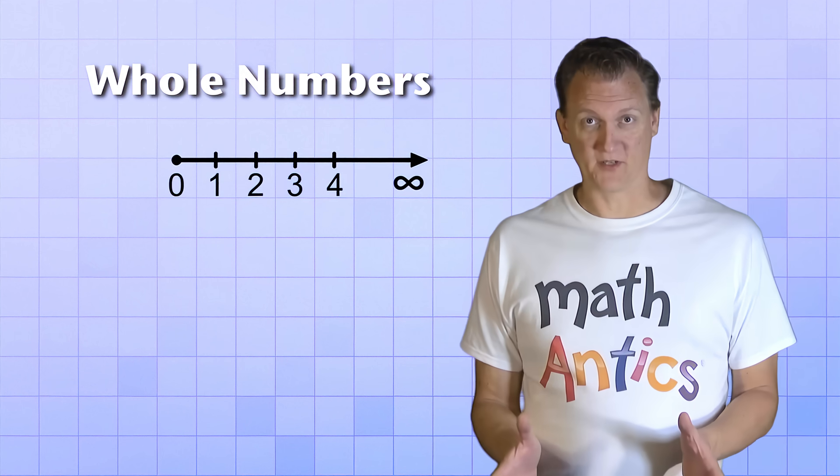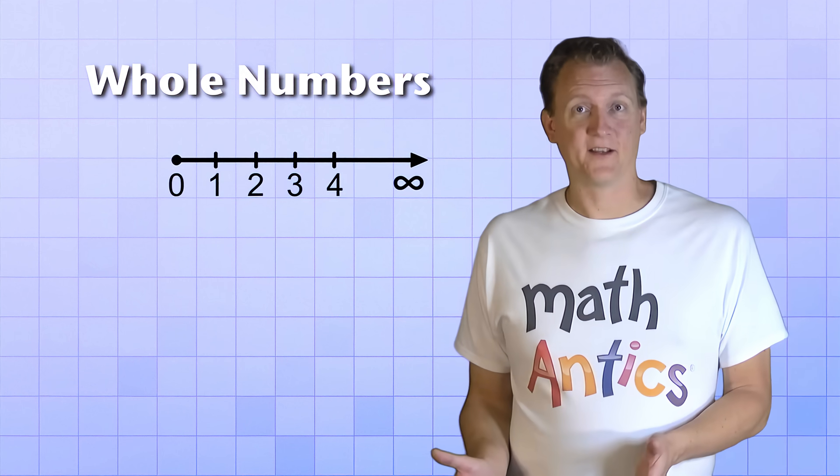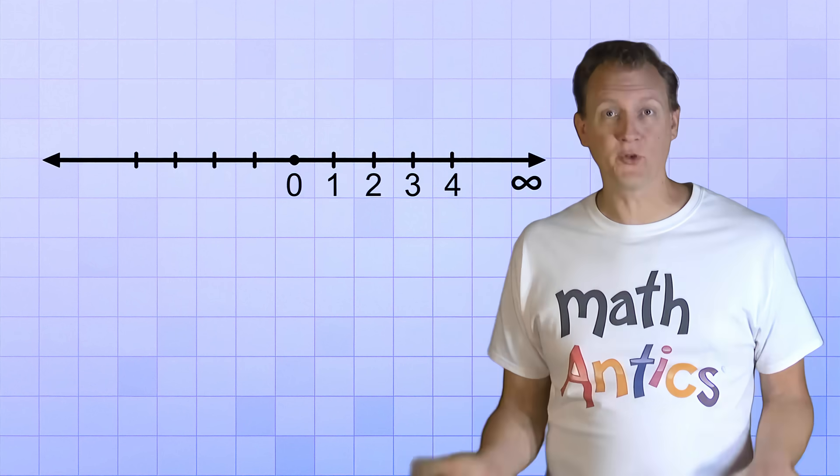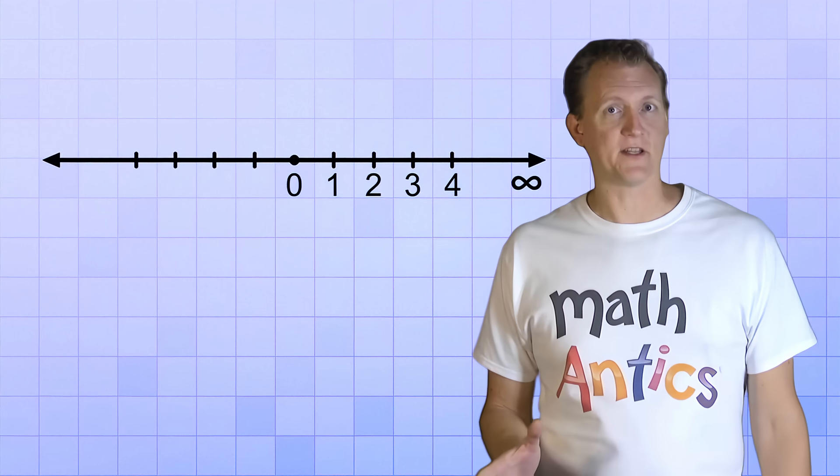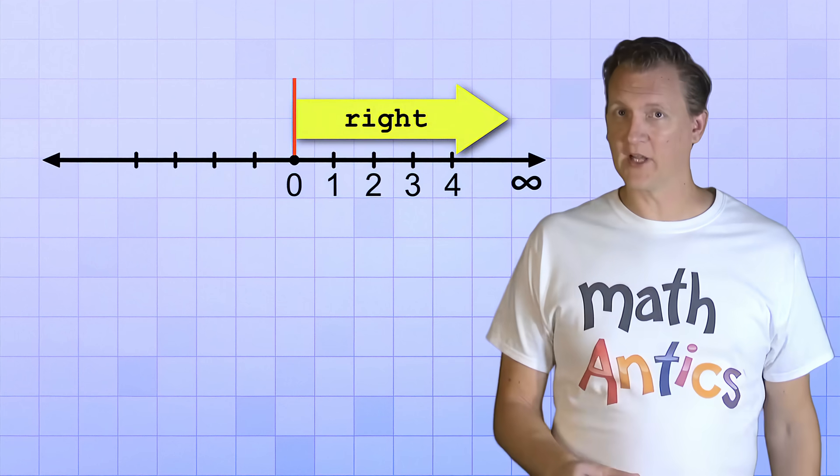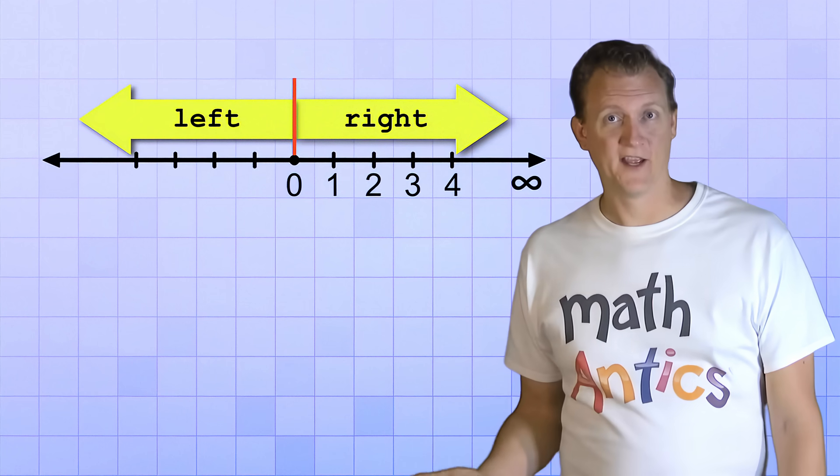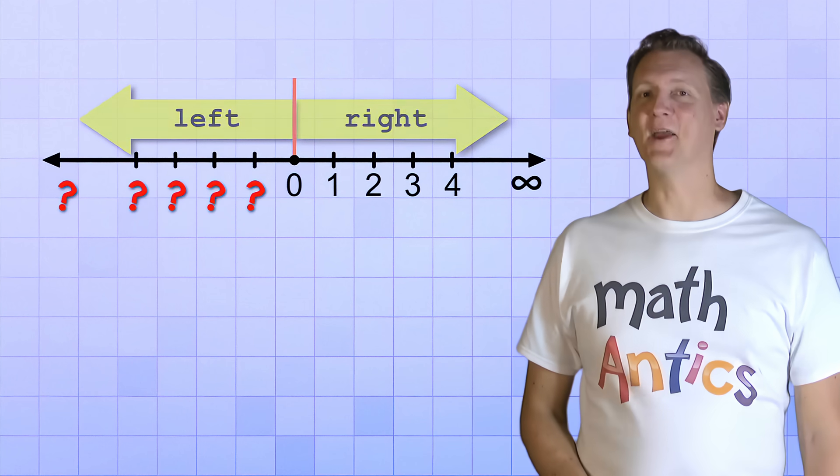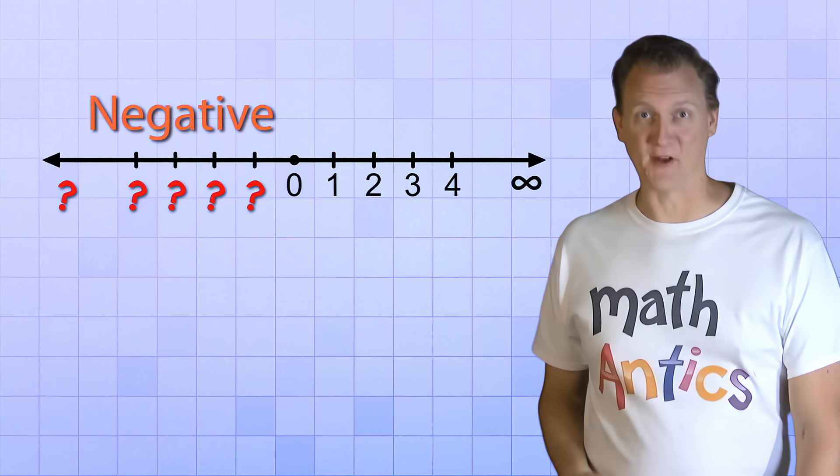That's a lot of numbers, but it's only half the story. And that's because the number line really goes in both directions. You're used to seeing the number line starting at zero and just going to the right, but the number line also goes to the left. And what numbers are on that part of the number line? Yup, you guessed it. Negative numbers.